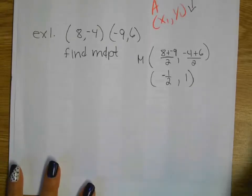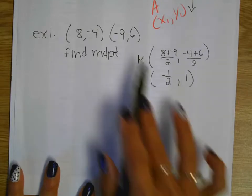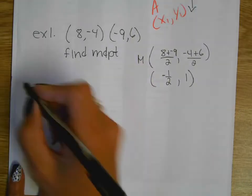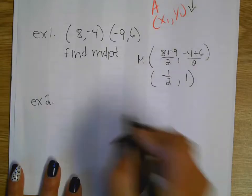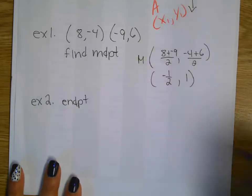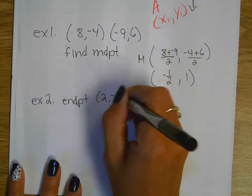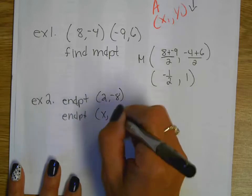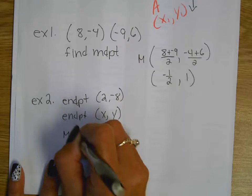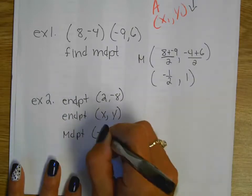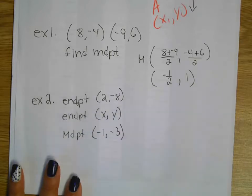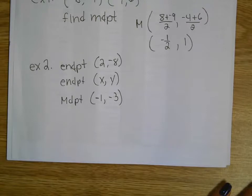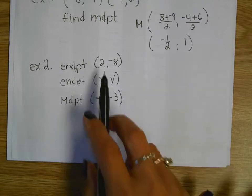Now the challenging one. If I give you an endpoint and the midpoint, can you come up with the other endpoint? This is an algebra set up and work backwards. So one of the endpoints is going to be at 2, negative 8. The other endpoint, you don't know. That's what I'm going to ask you to find. But I do know the midpoint. The midpoint is at negative 1, negative 3.